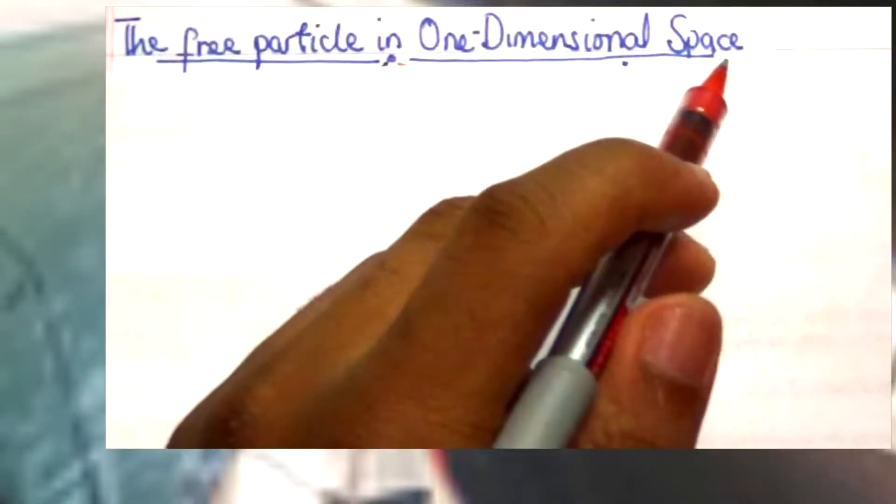Hello everyone, welcome back to my channel. In our previous video we looked at one of the five systems in quantum mechanics: a particle in a one-dimensional box, where we explored the boundary conditions, the Schrödinger equation, and wave functions used to determine the kinetic energy. Now in this video we will explore the second system in quantum mechanics, which is the free particle in one-dimensional space.